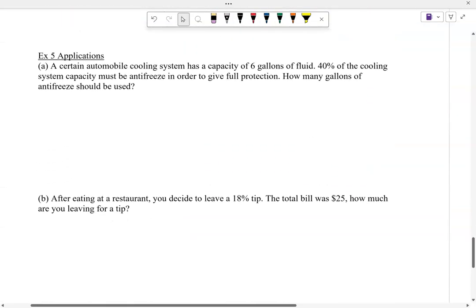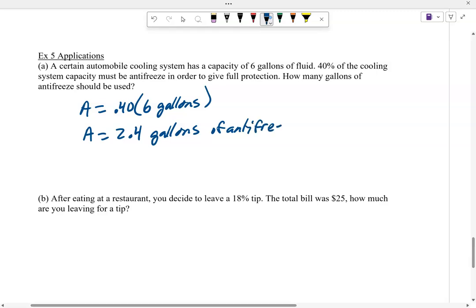Let's look at a couple applications. You've got an automobile cooling system with a capacity of six gallons of fluid. 40% of this cooling system has to be antifreeze. How many gallons of antifreeze should be used? The amount should be 40% of the six gallons. I punch in 0.4 times six, and I get 2.4 gallons of antifreeze.